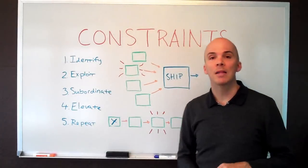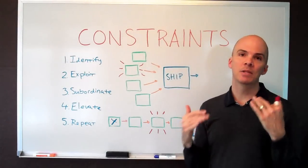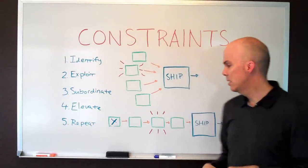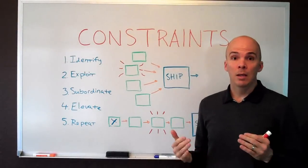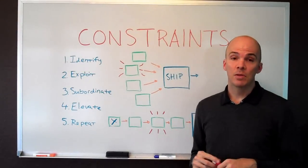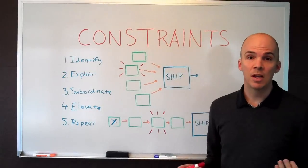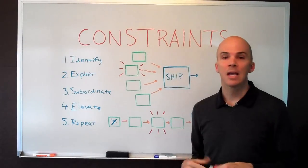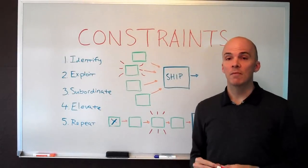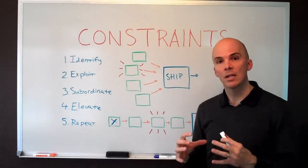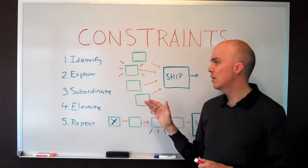Step two is exploit it, and by that they mean take it to its maximum capacity to elevate the overall ability to ship. And there's a lot of ways to do that. If it's a piece of machinery that isn't running 24-7, if it's a person, do they have all the resources they need? If they're not already at their max capacity, address that first.